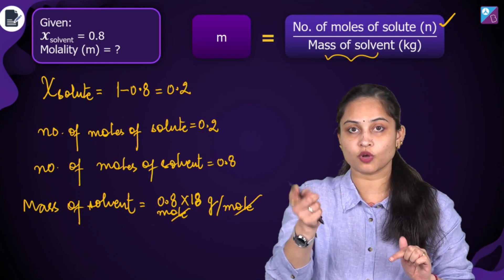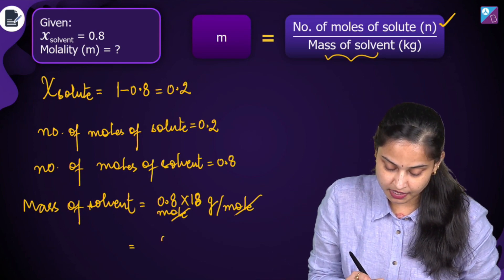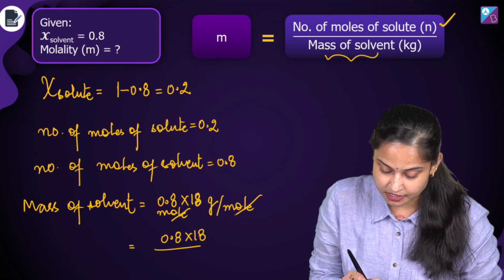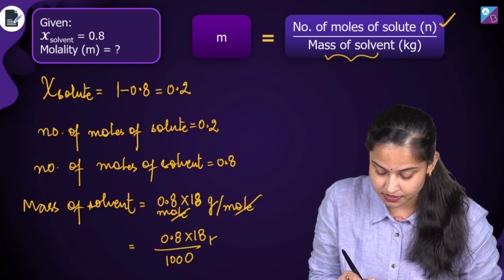But we want the mass of solvent in kg. So it will be 0.8 into 18 divided by 1000, so it is in kg.